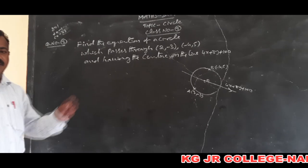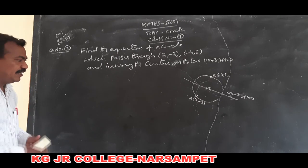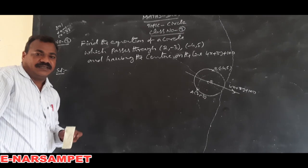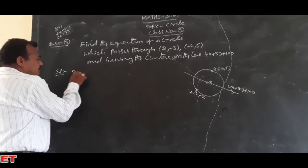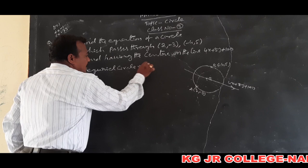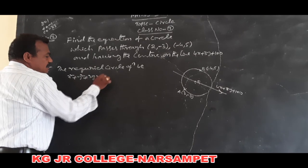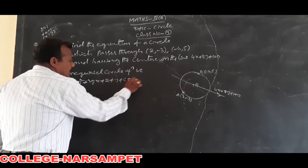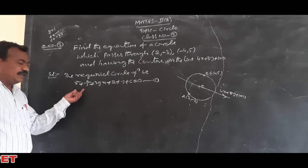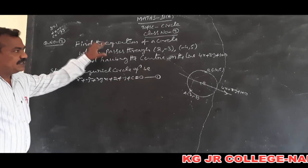We will find out the equation of a circle passing through two points and its center lies on the given line. For this, we consider the general form of a circle. The required circle equation is x² + y² + 2gx + 2fy + c = 0. We will be getting the values g, f, and c from using the given data.